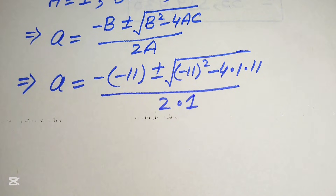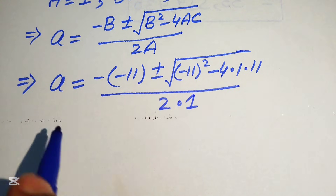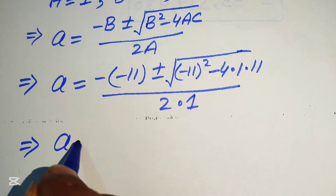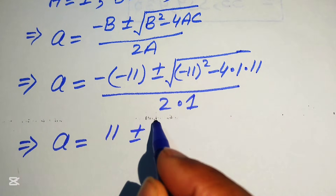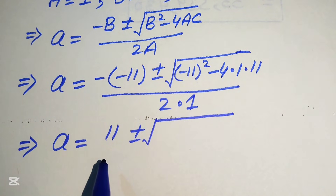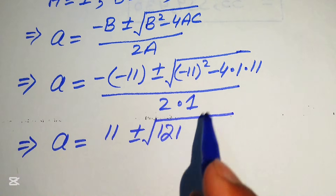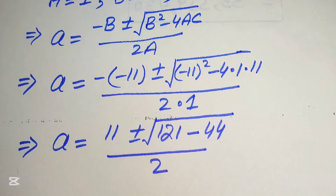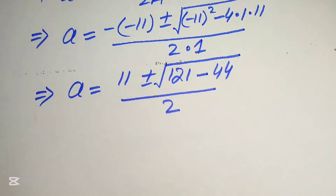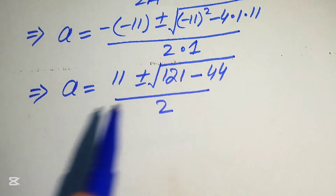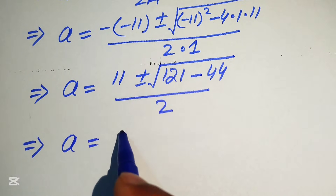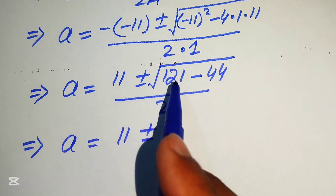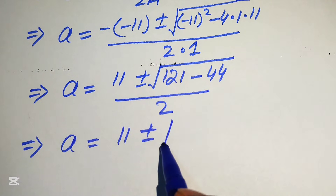So now in the next step we simplify the terms. We write a equals to — minus times minus becomes plus 11 — plus or minus square root of minus 11 squared equals 121, minus 4 times 11 equals 44, divided by 2. So now we focus on the term inside the square root sign.